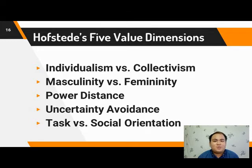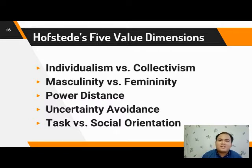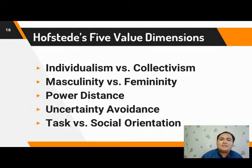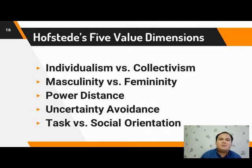Five value dimensions were developed. The first one is individualism versus collectivism. Then we have masculinity versus femininity. Then we have power distance, uncertainty avoidance, and task versus social orientation. We will discuss these five. There are actually two more that were developed with the help of Dr. Gerd Hofstede, Dr. Michael Bond, and Michael Minkoff, but we won't discuss those since they are relatively new and there is limited data from different cultures.